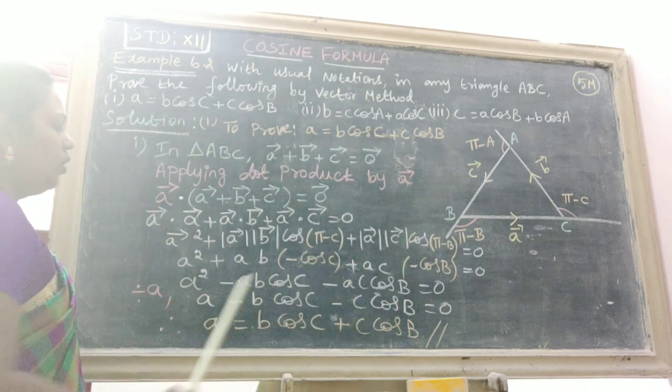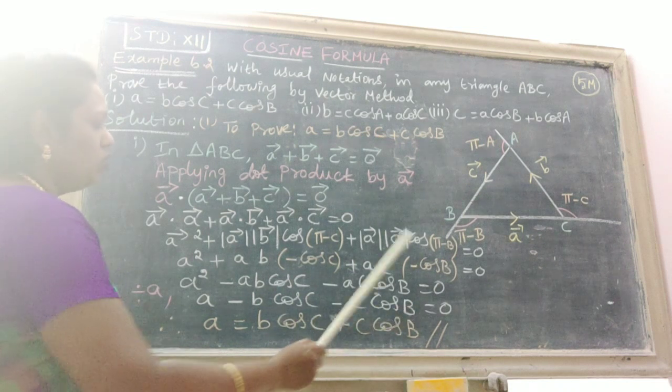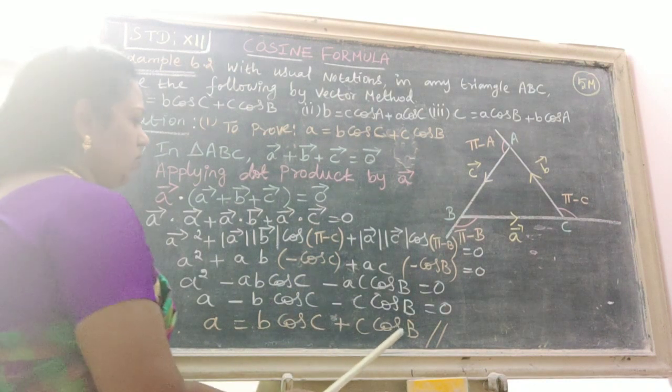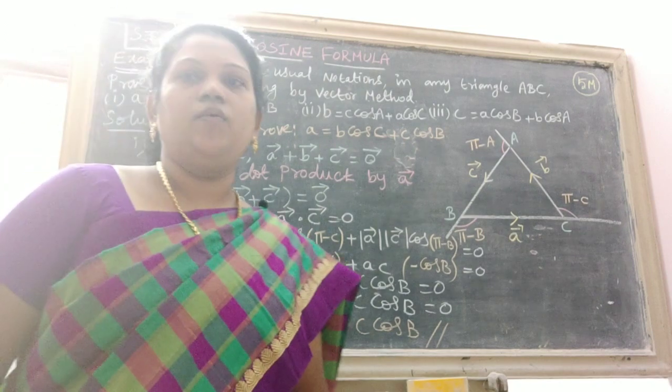Dividing by A, we get A minus B cos C minus C cos B equals zero. Therefore A equals B cos C plus C cos B. We get the answer. Second and third are homework.